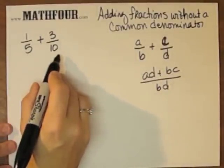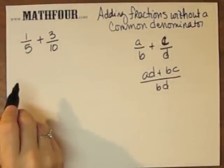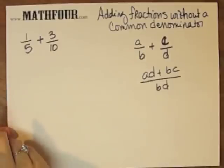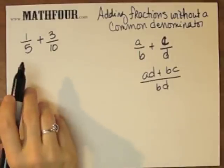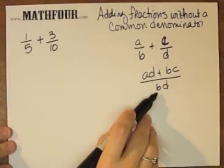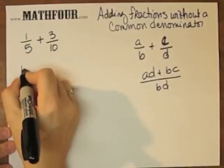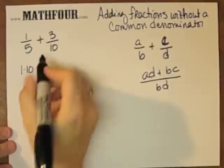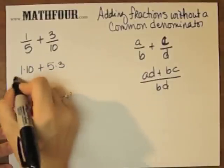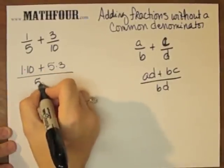So anyone that's done any fractions at all can see that there's a common denominator obvious here. We're going to avoid that. We're going to use this formula. So I have 1 times 10 plus 5 times 3 over 5 times 10.